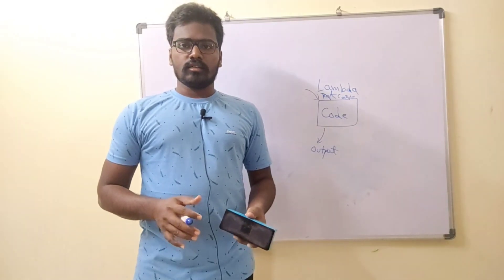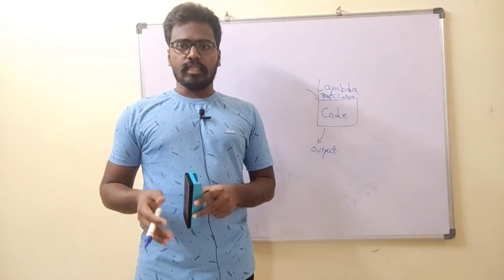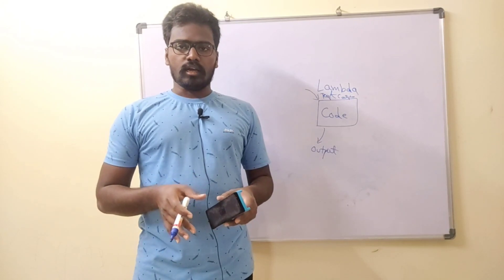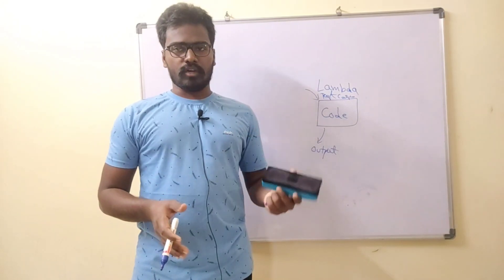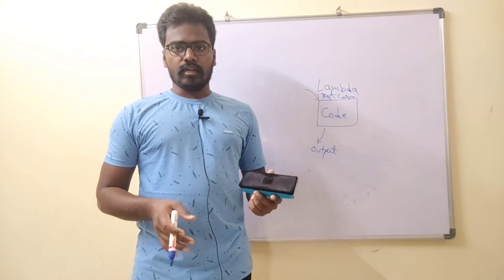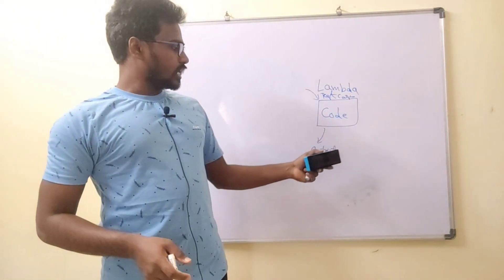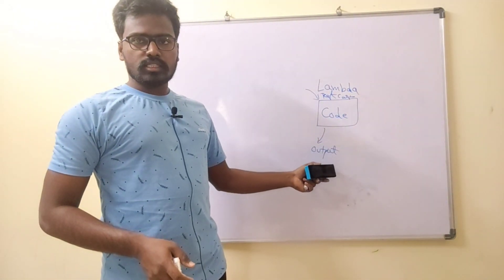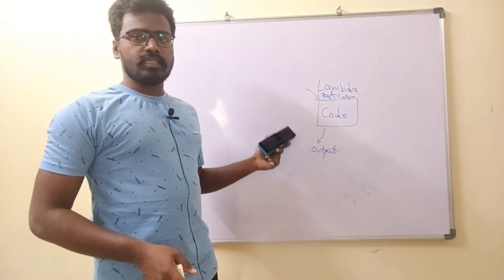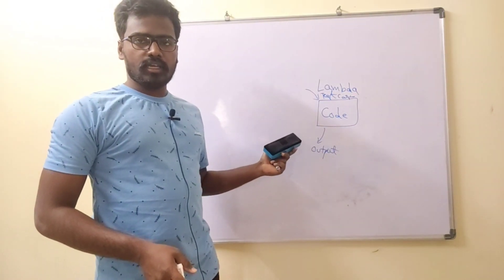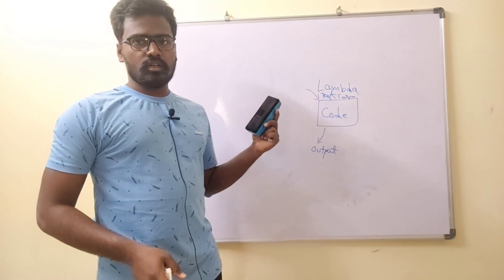The client, the user, can call the URL and we can connect the API Gateway to a Lambda function. The code will execute and give the output, which will return to the API Gateway, and finally the API Gateway will return the response to the caller, the user.